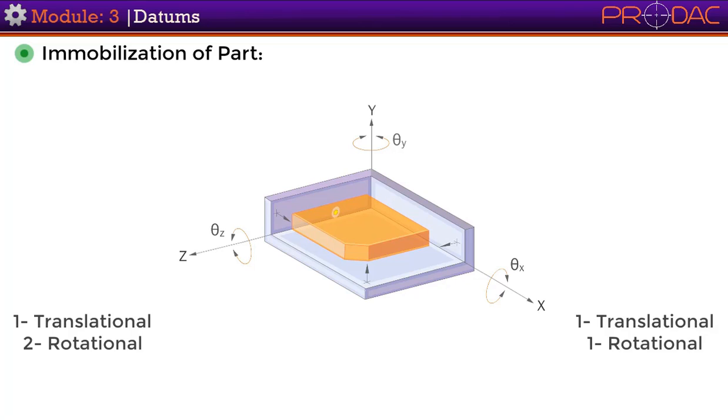Finally, the part is slid along the first two planes of the datum reference frame until the third datum feature contacts the third plane of the datum reference frame with a minimum of one point contact. It eliminates one degree of freedom, which is translational.